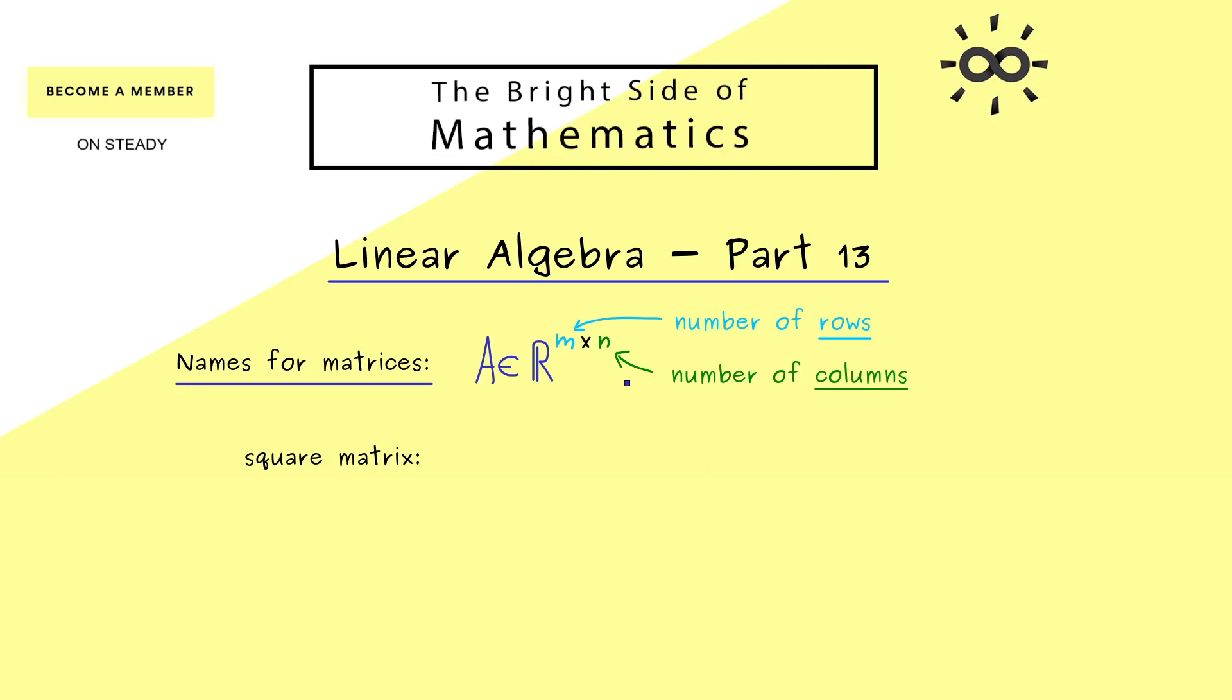And now it could happen that both numbers are the same and then we would talk of a square matrix. In other words the height and the width of the matrix are of the same size. So for example we could have a 3×3 matrix.